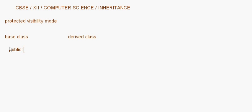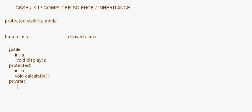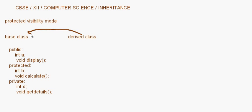In the base class, we have a public section with int a and a function display. Then we have the protected section with int b and void calculate. There is also a private section with int c and void get_details. Now suppose this derived class is inheriting from this base class.